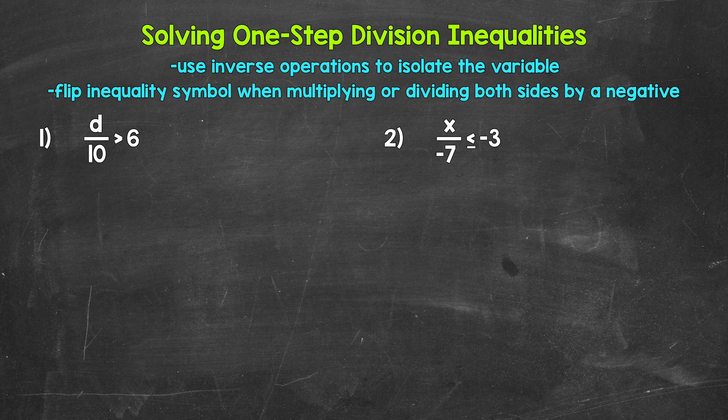Let's jump into number one, where we have d divided by 10 is greater than 6. So we need to isolate that variable d. It's being divided by 10, so we need the inverse operation of division, which is multiplication. So let's multiply the left side of the inequality by 10. Whatever we do to one side of an inequality, we must do to the other to keep it balanced, so multiply the right side by 10 as well.